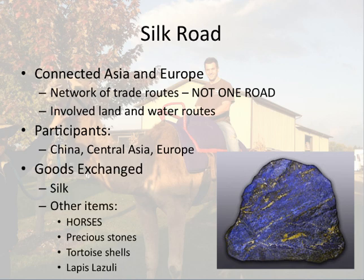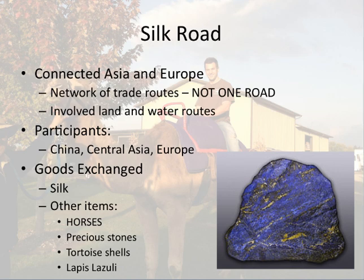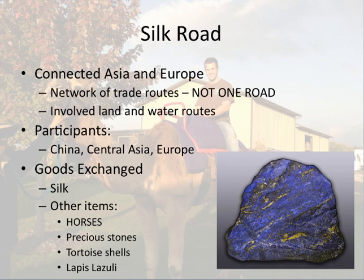Goods that were exchanged — obviously silk. Silk was a luxury item coveted by the Romans. It's spun from a substance secreted from silkworms of mulberry trees. The Chinese held it closely and guarded it as a state secret for many years, so it was in high demand and very expensive because others couldn't make it. The Chinese would trade silk for things like horses and precious stones, including lapis lazuli — a precious blue stone you can grind into powder and use as a blue pigment. You also see trade in tortoise shells gathered from India and the Middle East.